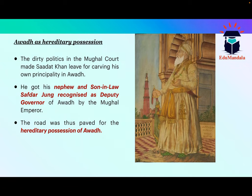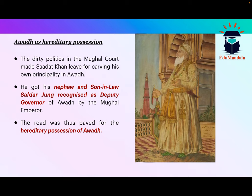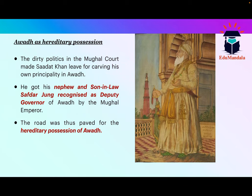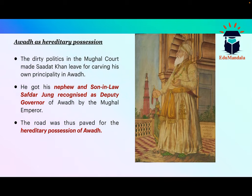As mentioned in previous lectures, the governors of provinces — the subedars — were not hereditary when Mughal authority was strong. They were regularly and directly appointed by the Mughal emperor, whether for Bengal, Awadh, or Deccan. When Sadat Khan was a noble of the Mughal court and after the death of Aurangzeb, when dirty politics began in the Mughal court, he decided that his political career had no future there and he had to leave.